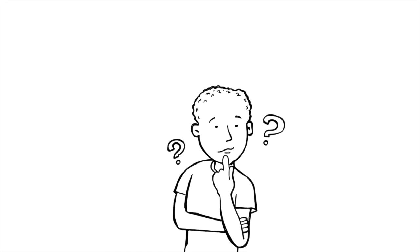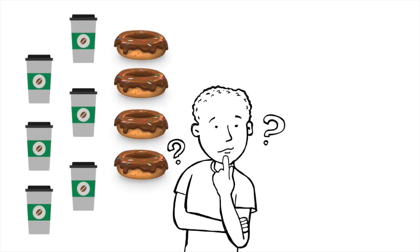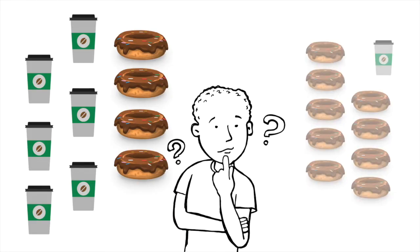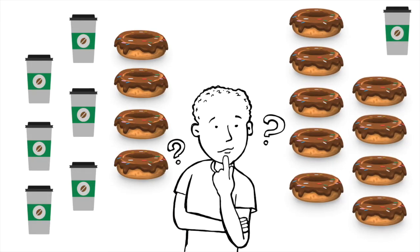Suppose a consumer loves coffee and loves doughnuts. They have the option of consuming 6 cups of coffee and 4 doughnuts or 9 doughnuts and 1 cup of coffee. While this sounds ridiculous, let's assume the consumer is actually indifferent between each combination. This means that they will gain equal utility from either combination. Next, we will look at this information on a diagram.